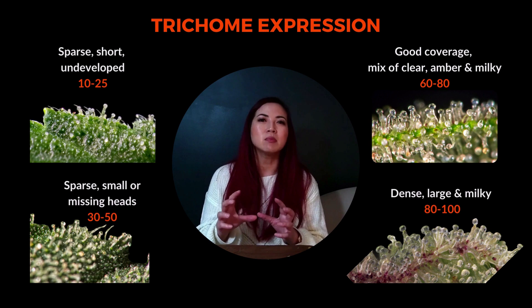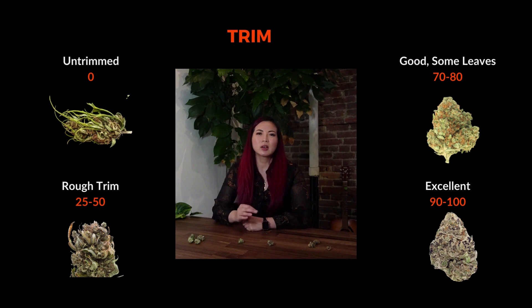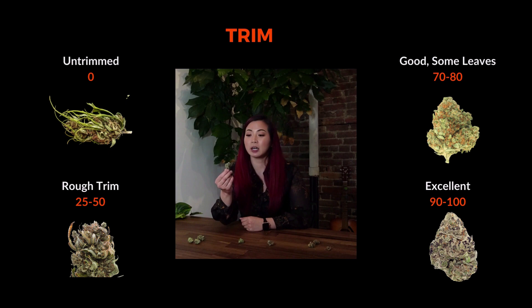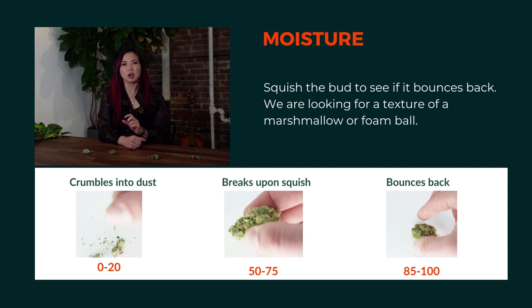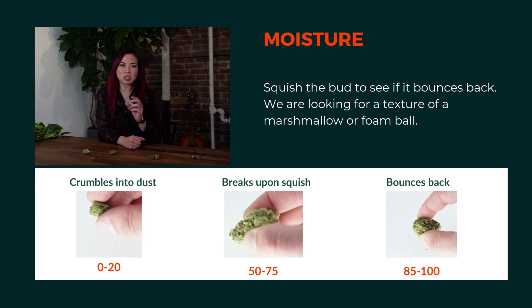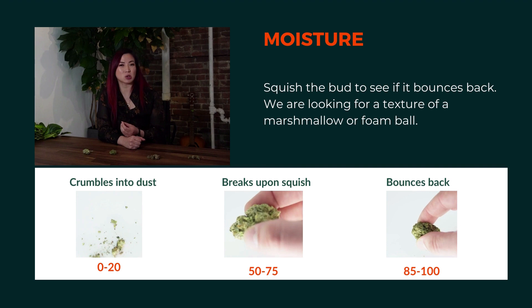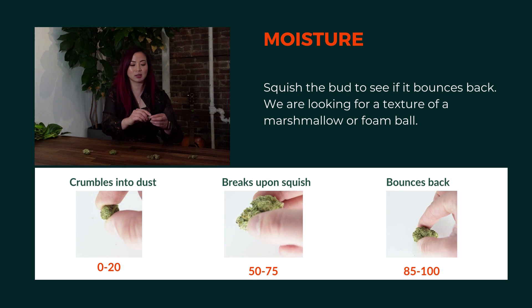Trim: it's very easy to determine what is a good trim. We're looking for clean bud with no sugar leaves — all you see is the flower. The key concept for good moisture is that you want an ideal water content of between 10.5 and 11%, so that the flower maintains its monoterpene content. Those monoterpenes are what make cannabis so delicious and smooth to smoke. When something is dry and crumbly like this, it turns to dust — that is something scoring less than a 2.